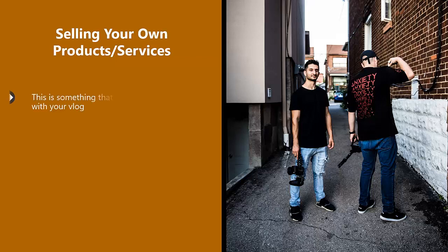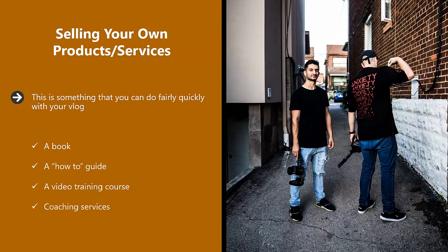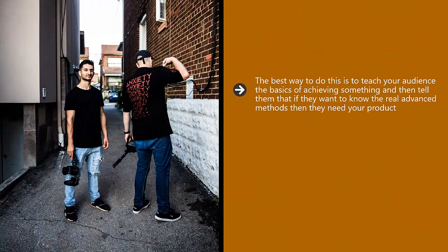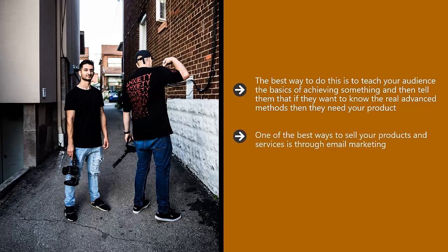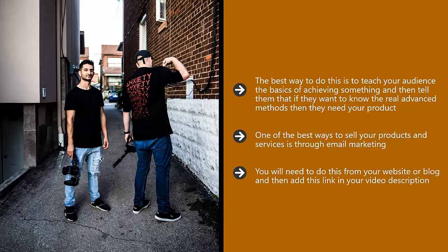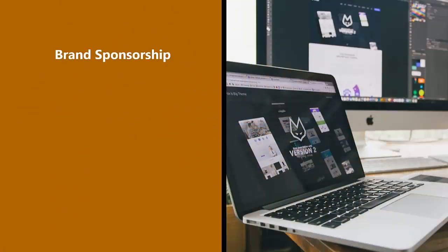Selling your own products or services: This is something you can do fairly quickly with your vlog. Examples include a book, a how-to guide, a video training course, or coaching services. Teach your audience the basics and then tell them that if they want the advanced methods, they need your product. Provide value in your videos to get your audience hooked but don't give everything away for free. One of the best ways to sell your products and services is through email marketing — use an autoresponder service such as AWeber or GetResponse and offer something of value for free as an incentive to join your email list. Add this link in your video description.